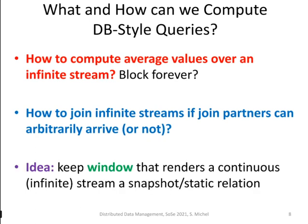Here the concept of so-called sliding windows comes into play. We keep a window over the individual data streams, and these windows somehow bring our data stream into a more snapshot or static relation context. The tuples inside the window are then the ones that are aggregated. If you have two streams and two windows, one for each, then you compute the join over the tuples in the individual windows. This brings us closer to the traditional database context, as opposed to computing count and average queries over data samples. Here we go more into the area you know from the database course about SQL queries.